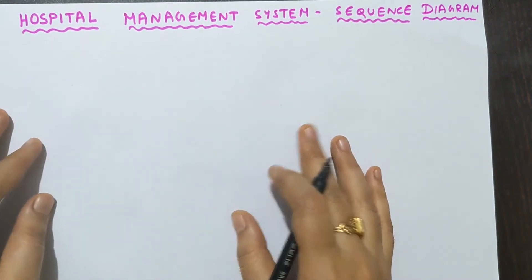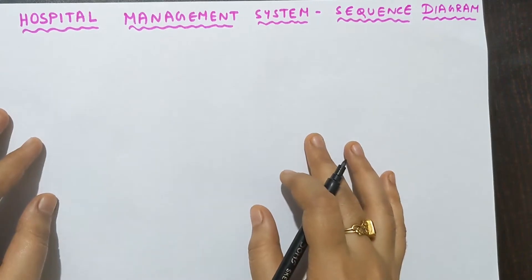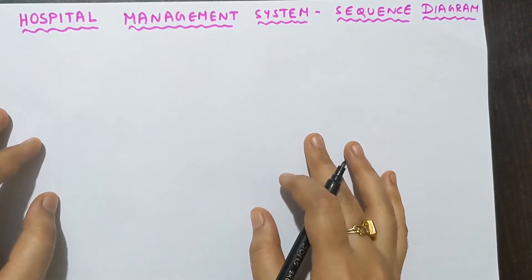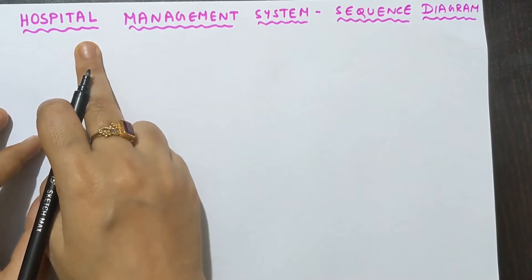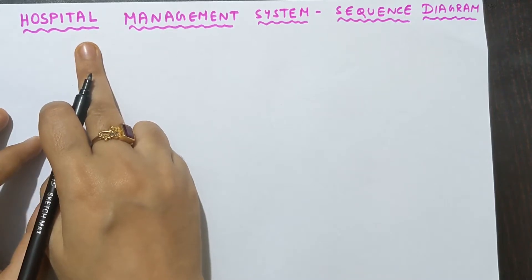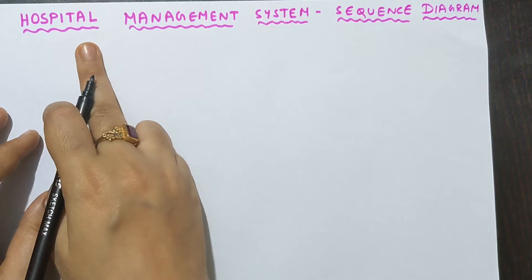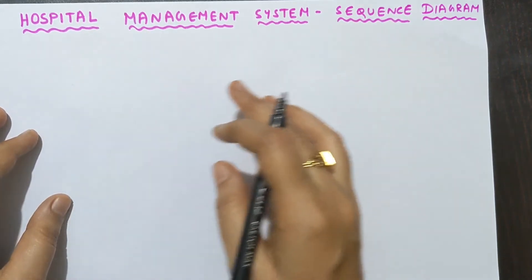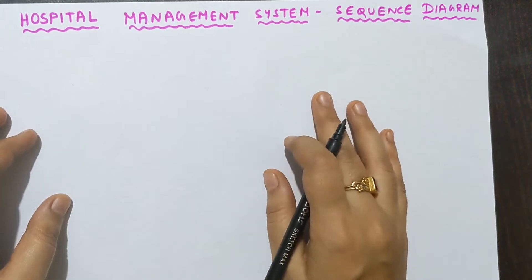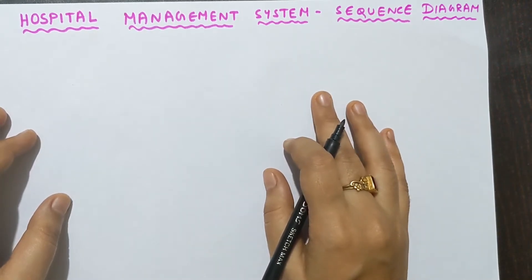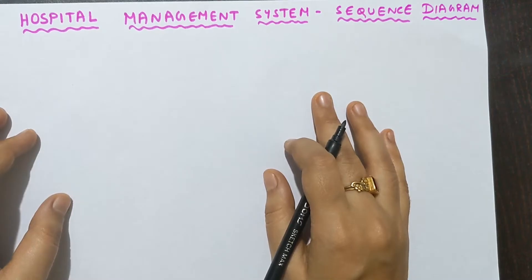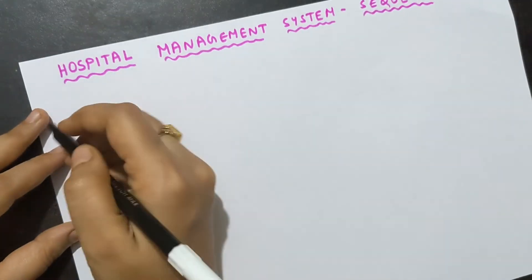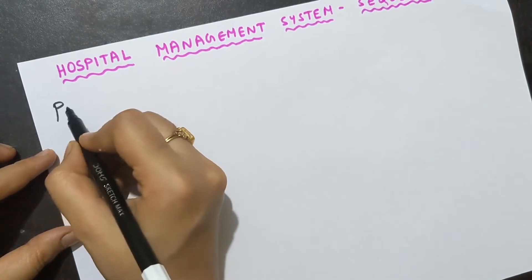The first step is to draw the multiple objects. We need to find the multiple objects for the hospital management system. When you hear the term hospital, the important people are patient, doctor, nurse, and receptionist. Without patients, the doctor has no job. The receptionist is very important because the patient cannot directly ask everything to the doctor — the doctor is too busy. The nurse is also very important in order to help the doctor.